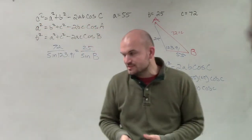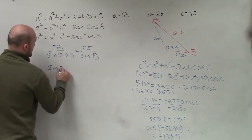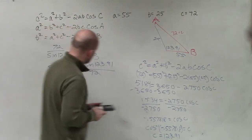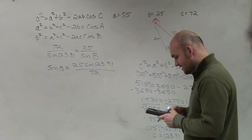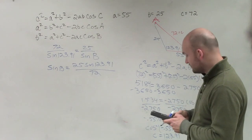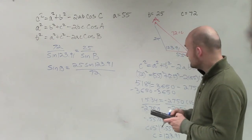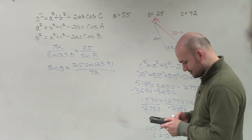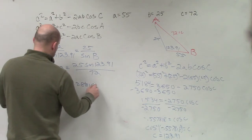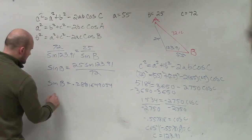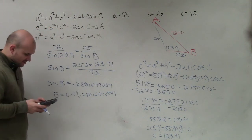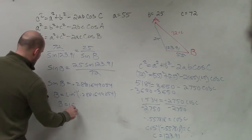So I'll solve for B. Now I know that the sine of B equals 25 times the sine of 123.91 divided by 72. So then to find B, all I simply do is take 25 times the sine of 123.91 divided by 72, take the inverse of that. So sine of B equals 0.288165, and then I take the inverse to get B equals 16.75.